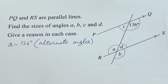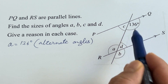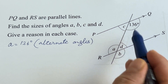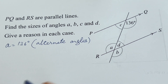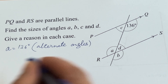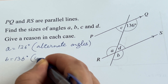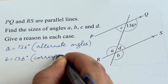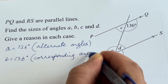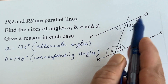For angle B: A and B are vertically opposite, or 136 and B are corresponding — you can choose either, but you must give a proper reason. Using corresponding angles: B equals 136 degrees, because corresponding angles are equal.